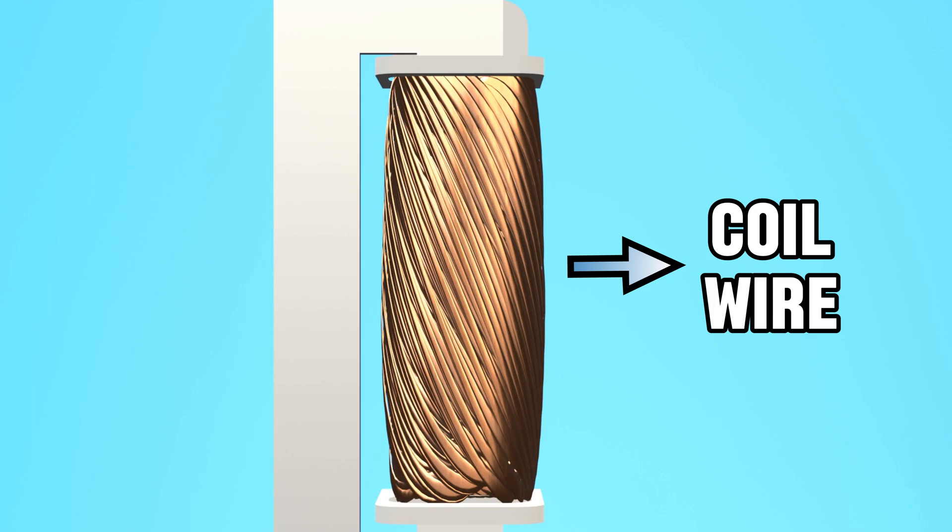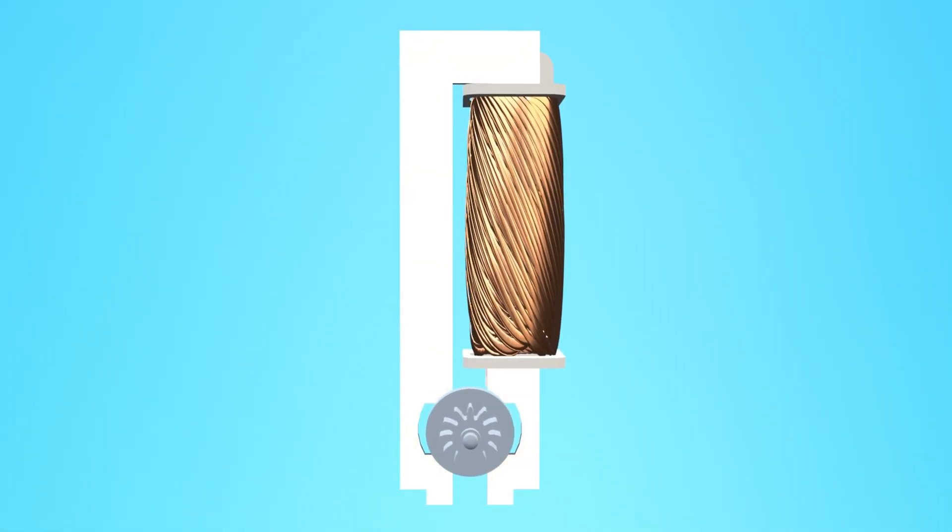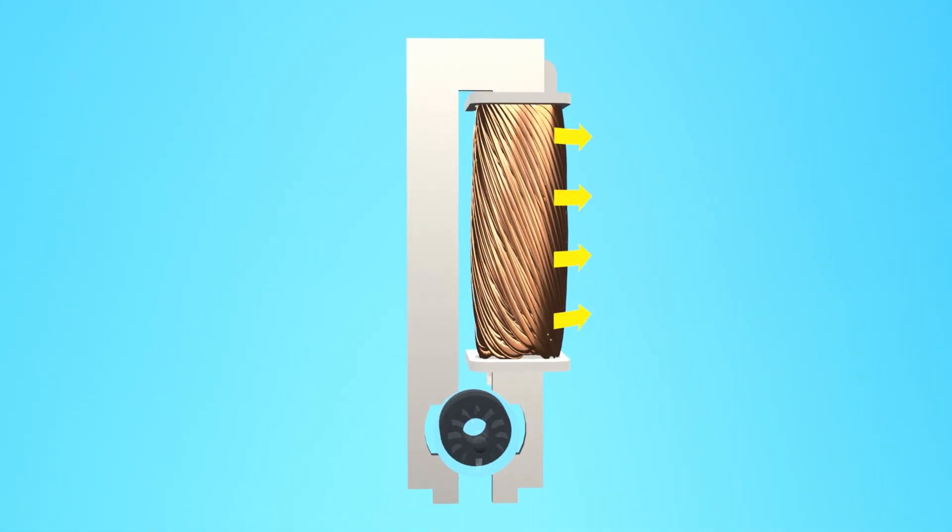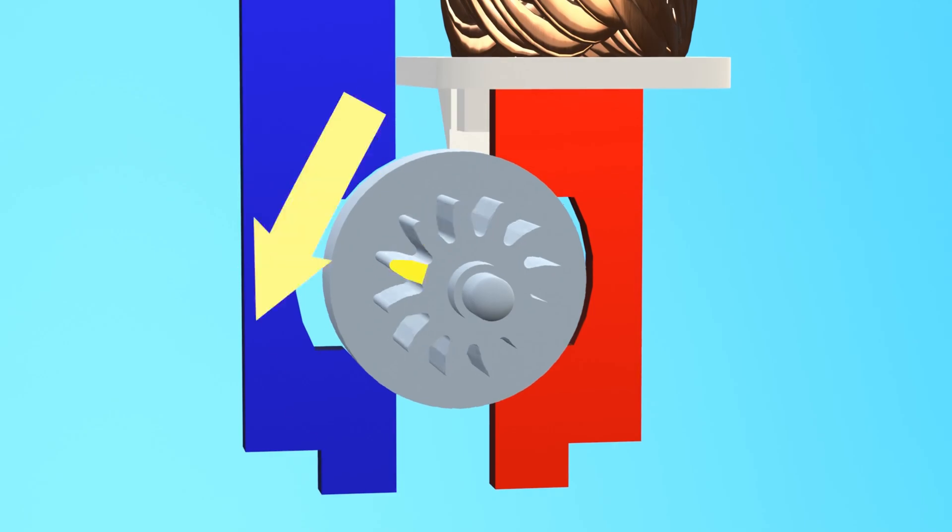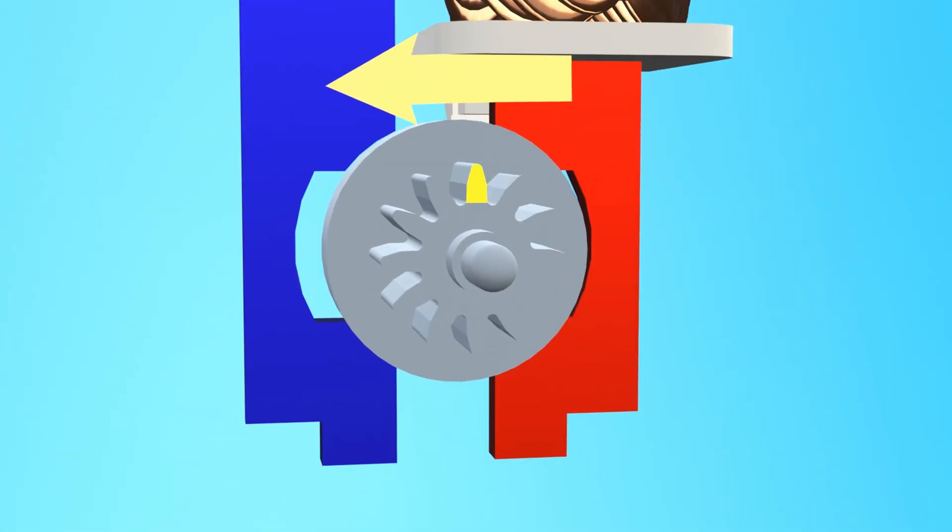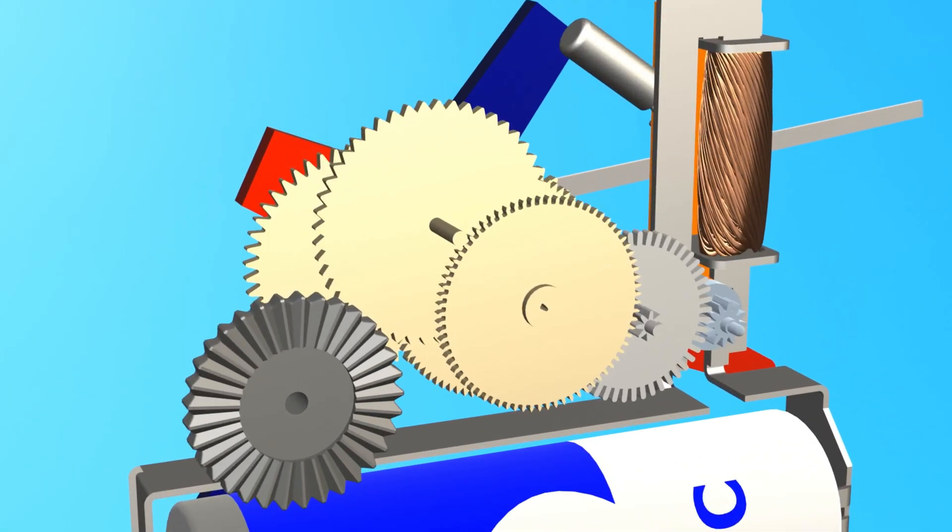The coil uses electrical current to generate a magnetic field, and a strip of iron channels that magnetic field to the drive gear. Every second, the electromagnet switches directions, thus causing the magnet inside the driver gear to rotate 180 degrees.